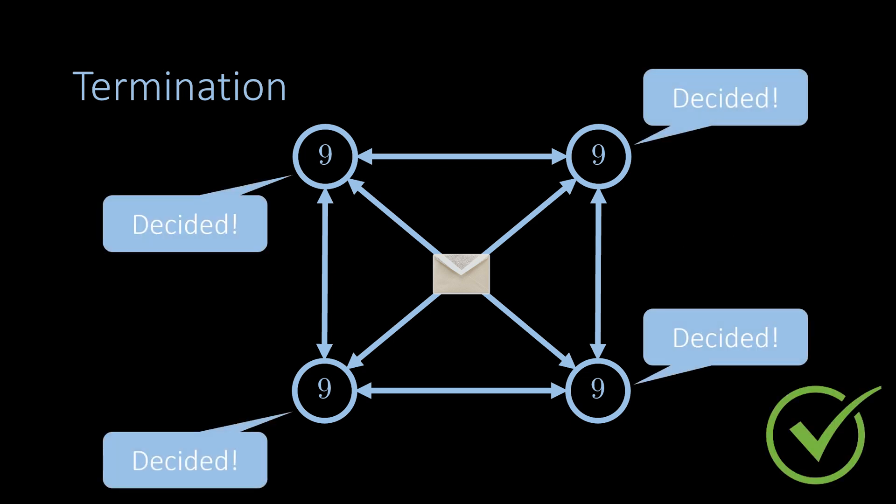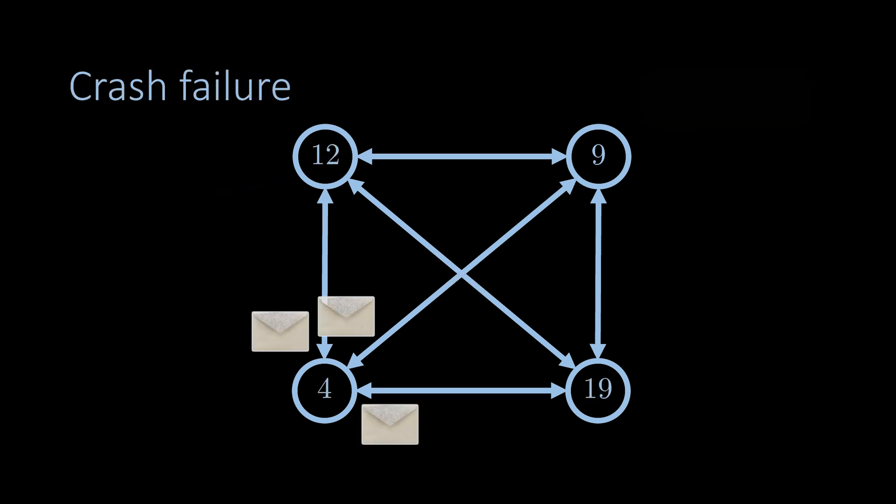The consensus problem is non-trivial in a model where nodes may fail. For example, in the crash failure model, a node may crash at any time during the execution of the consensus algorithm.